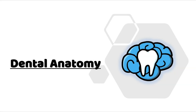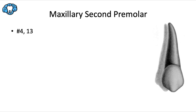Hey everyone, Dr. Ryan here and welcome back to our dental anatomy series. This video is going to be focused on the maxillary second premolar. Using the universal tooth numbering system, this includes tooth number four and thirteen. I'm using the universal numbering system, not the Palmer notation or FDI system, to avoid confusion, since that's what the board exam typically refers to.